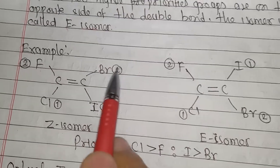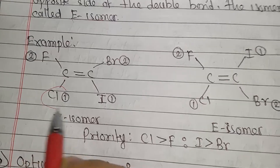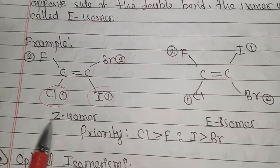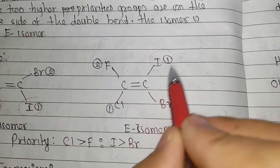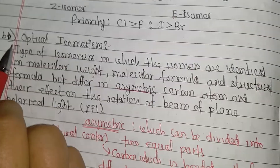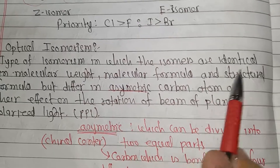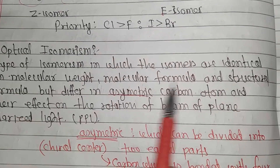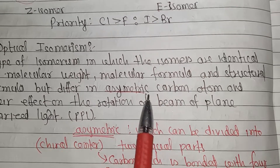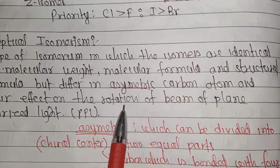Optical isomers are identical in molecular weight, molecular formula, and structural formula, but differ in the arrangement at the asymmetric carbon atom and in their effect on the rotation of a beam of plane polarized light.